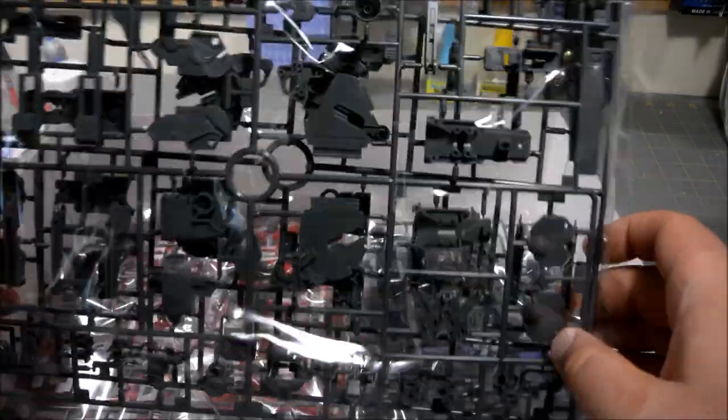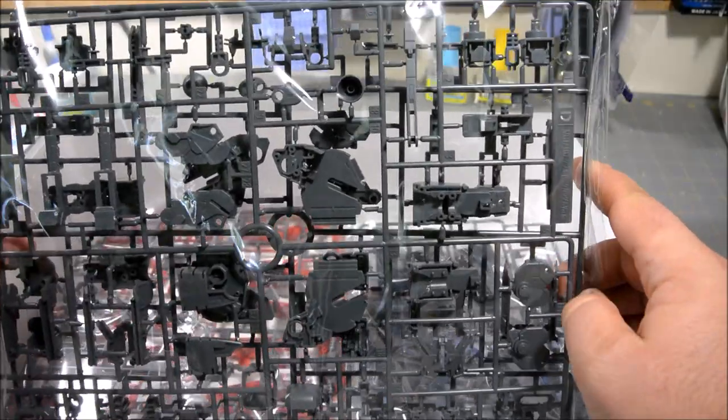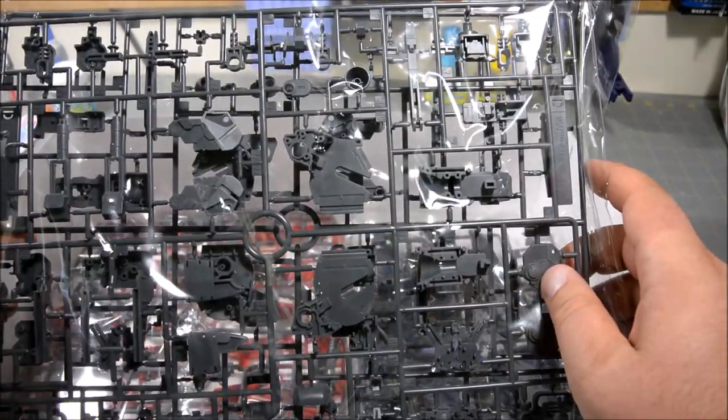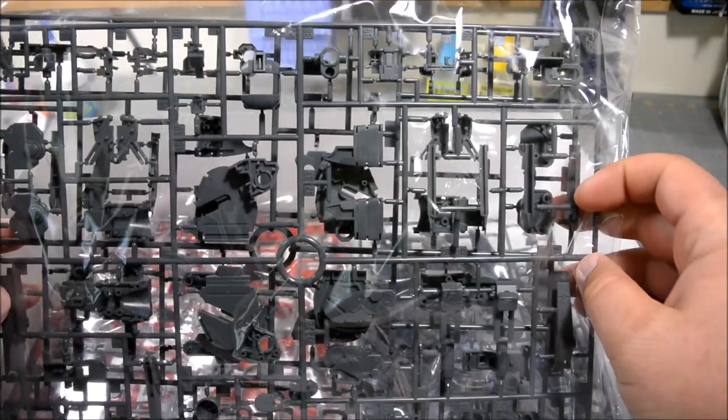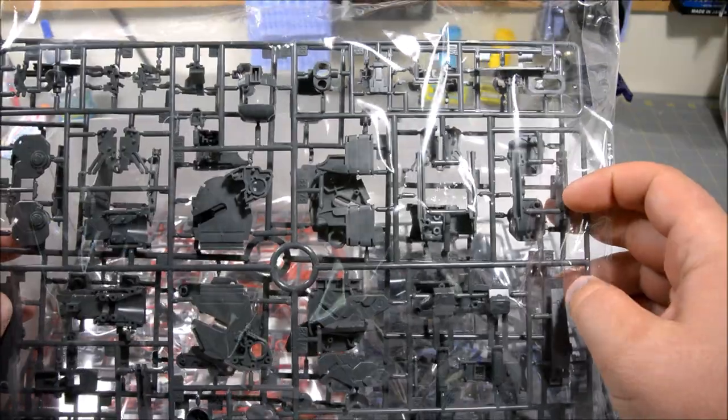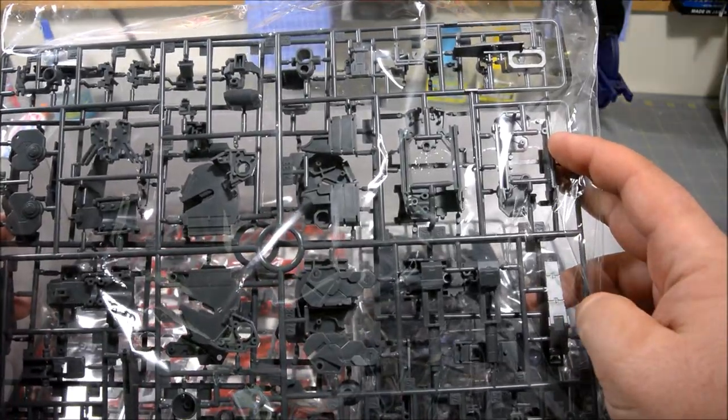More inner frame stuff, and even larger runner than the last one. Looks like mostly inner frame parts for the lower half of the body: legs, waist section, feet, stuff like that.